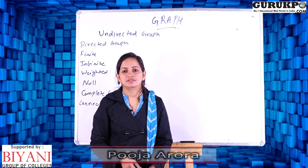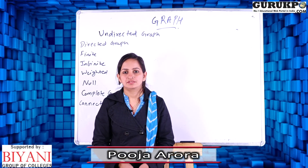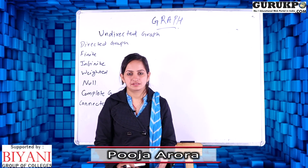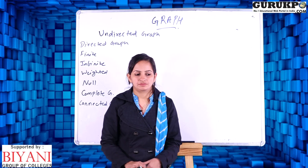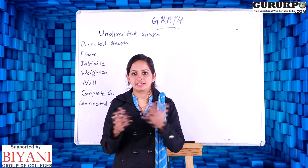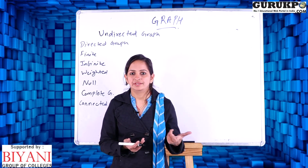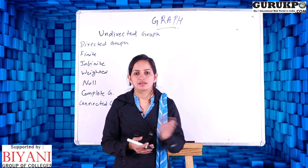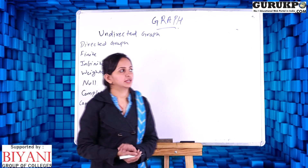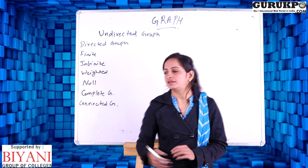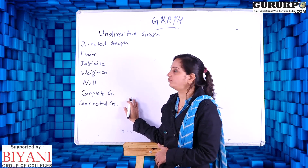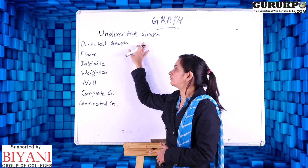Hello friends, my name is Puja Roda, assistant professor at Bayani Group of Colleges. I am giving you a video lecture on the topic of graph theory in discrete maths. In my last lecture we already discussed what is a graph, vertex, and edges, what is a vertex, what is an edge, and types of vertices and types of edges. Today we are going to discuss types of graphs. The first type is called undirected graph and the second one is called directed graph.